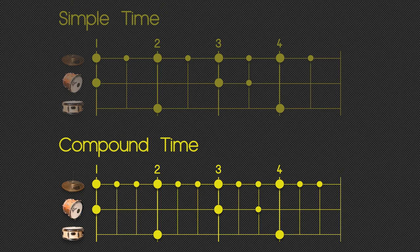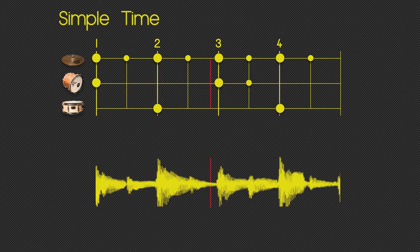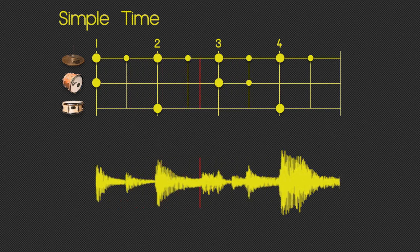So why am I telling you this? Well, later when you come to quantizing your drum beats, you're going to want to know whether your song is in simple or compound time. Let's add a guitar part to our simple time. Now the guitar part is also playing in simple time—it's playing on divisions of 2 of the bar.